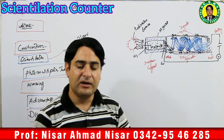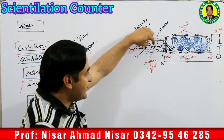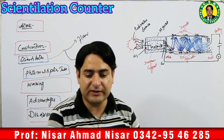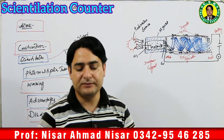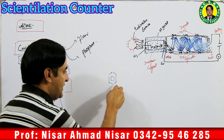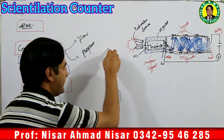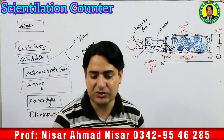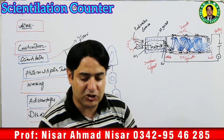For beta particle detection we can use anthracene instead of sodium iodide and thallium. Zinc sulfide is used for the detection of alpha particles. Para-terphenyl and benzylene provide a liquid scintillation medium mostly used for low energy beta particle detection.